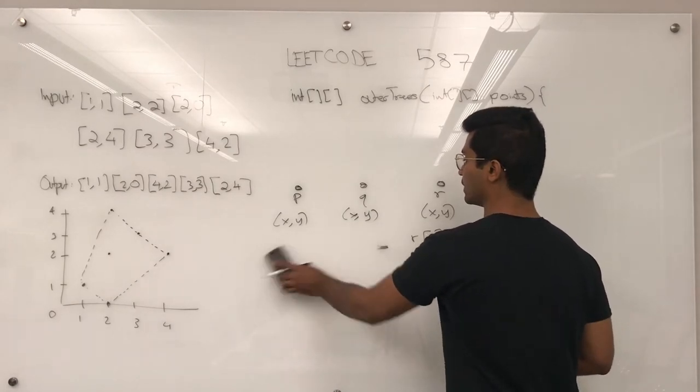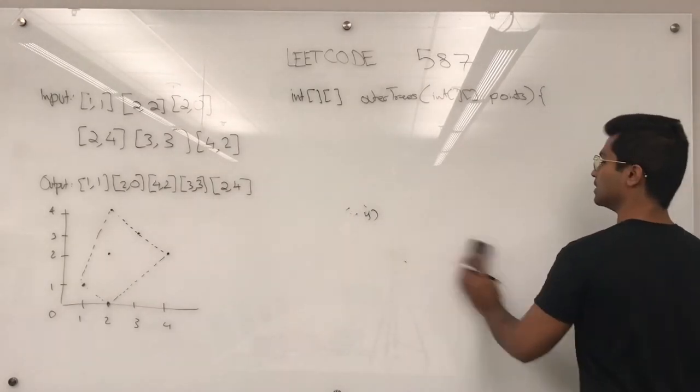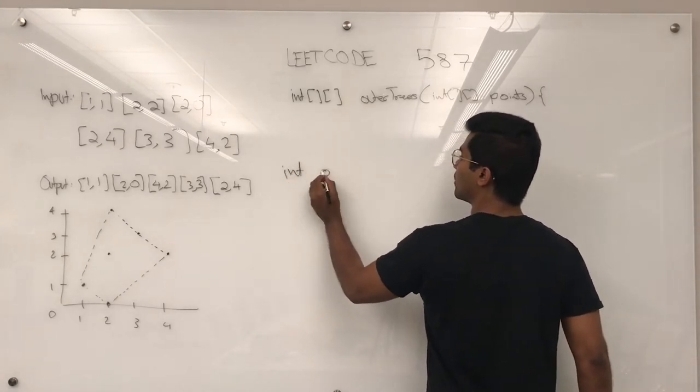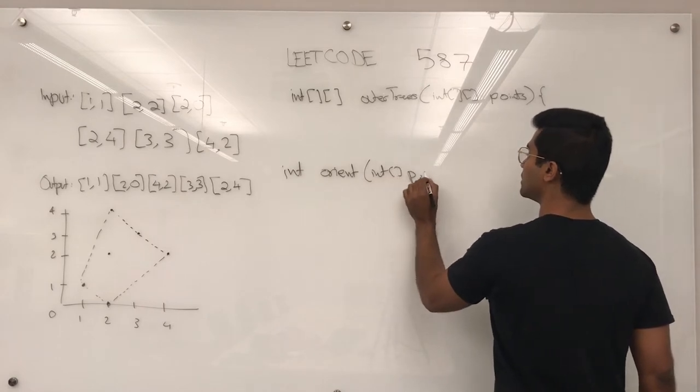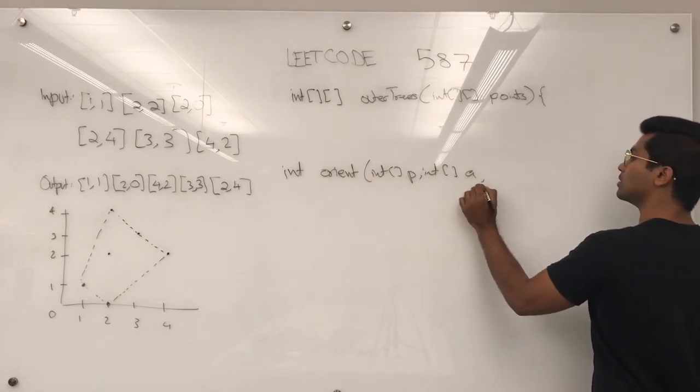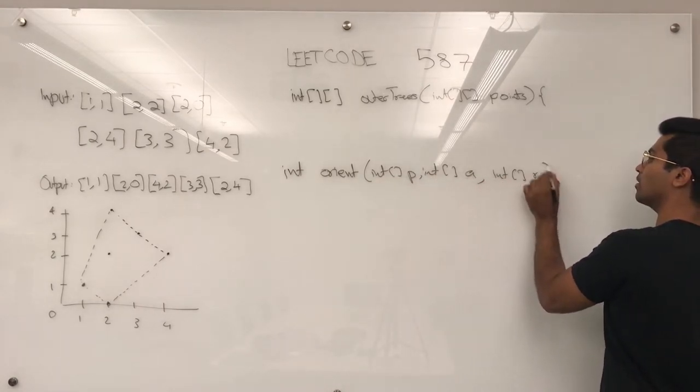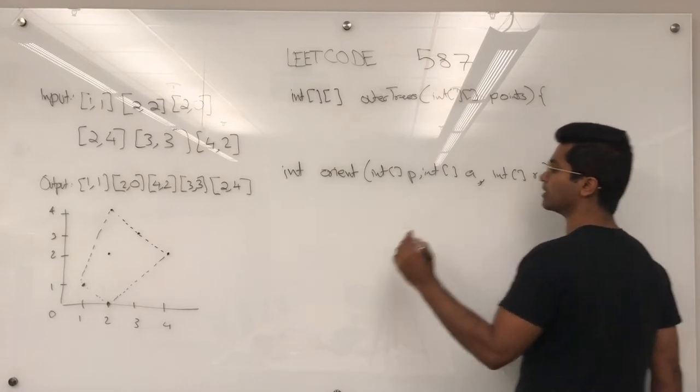So to write this out, we can write the method out itself. Int orient for orientation, given three points, int p, int q, int r is going to be like,